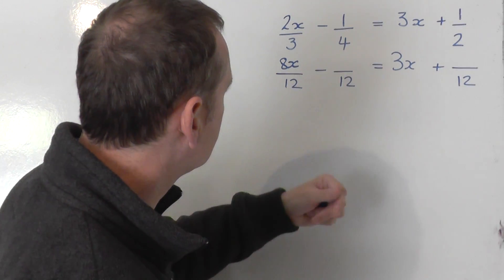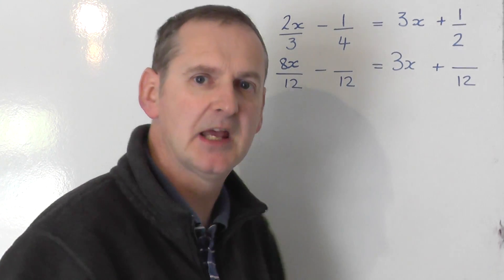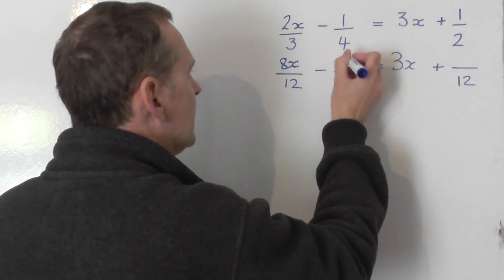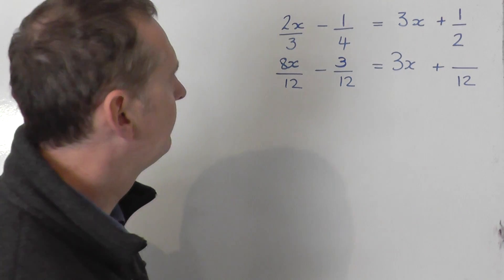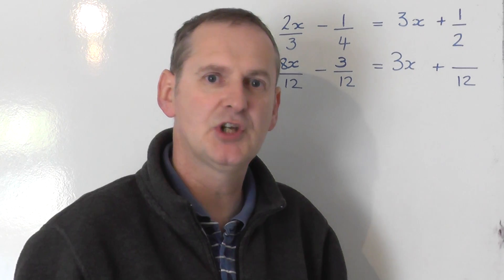Do the same thing for this fraction. 4 needs to be trebled to get 12 on the bottom. So to keep the fraction the same, you treble the top line. 1 times 3 is 3. The 3x has no fraction involved, so just leave that identical. It doesn't change.